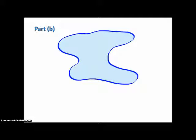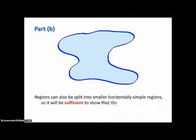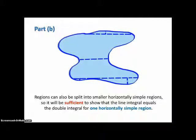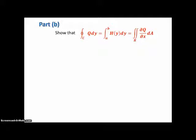Part B will be very similar. For Part B, we again have a region with C going around it, and we claim that regions can also be split into smaller horizontally simple regions. So it's sufficient to show that the line integral equals the double integral for one horizontally simple region, because then all those regions can be added together. We'll show the line integral Q dy equals a single variable integral, and that the double integral of the partial derivative of Q with respect to X equals that same single variable integral.